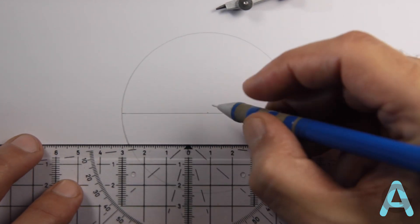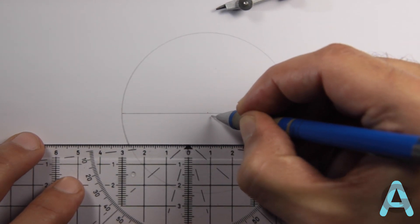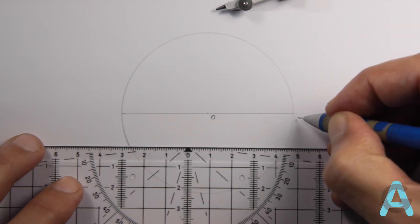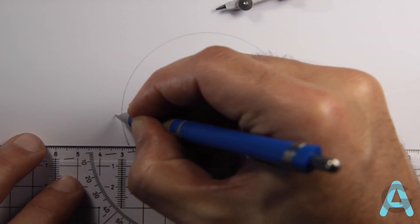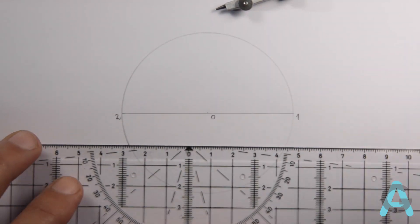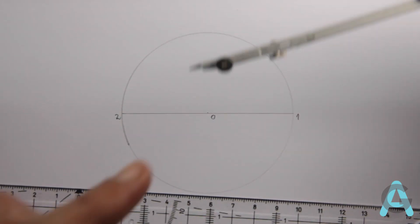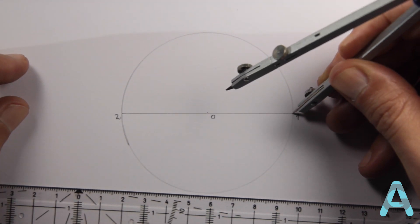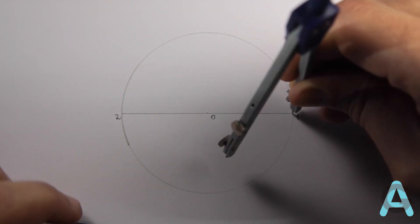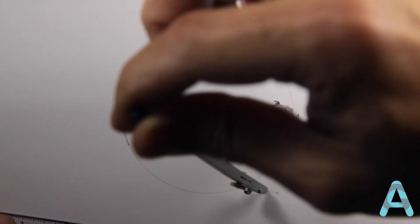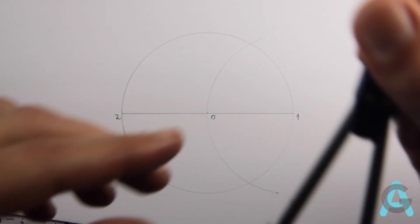The center is the point O of origin and this end we'll call 1 and the other 2. Afterwards, we'll put the needle of the compass in 1 and open it until O, and trace an arc that intercepts the circle two times.